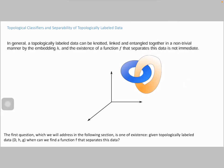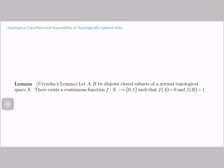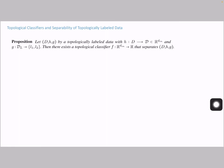The first question we'd like to ask is: given topological labeled data, can we always find a continuous function that separates this data? To show anything about this, we'll recall the Urysohn lemma from topology. Urysohn's lemma states that if you are given two disjoint closed subsets A and B of a normal topological space X, then we can always find a continuous function f from X to [0,1] that sends the set A to 0 and sends the set B to 1.